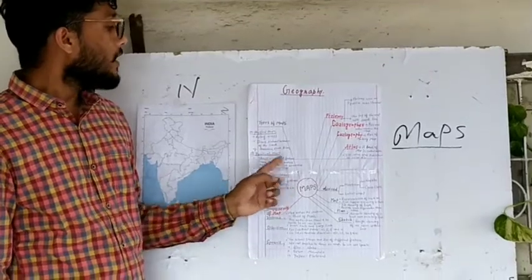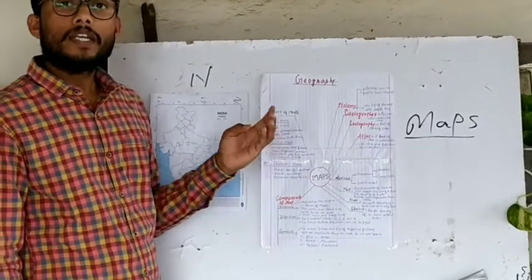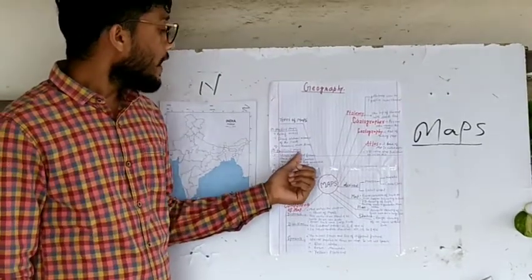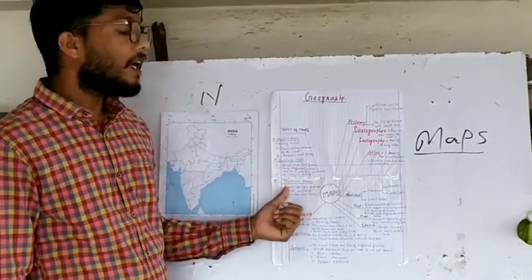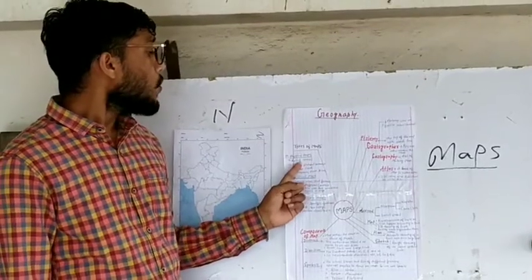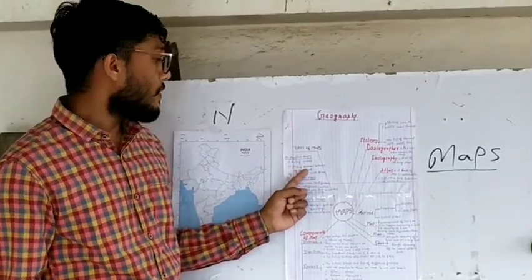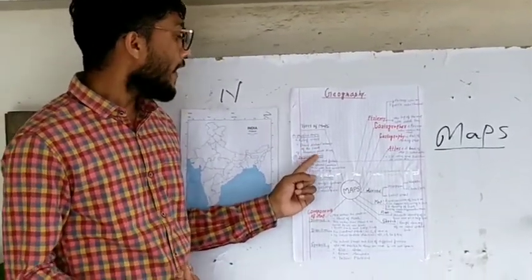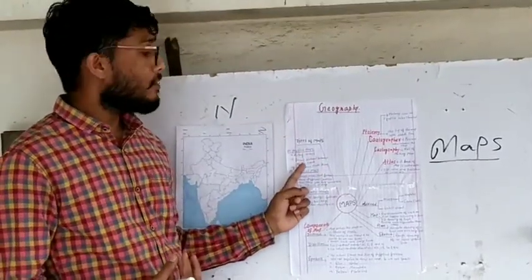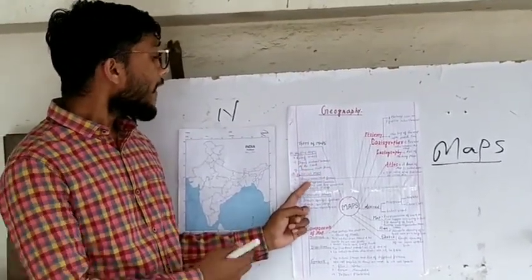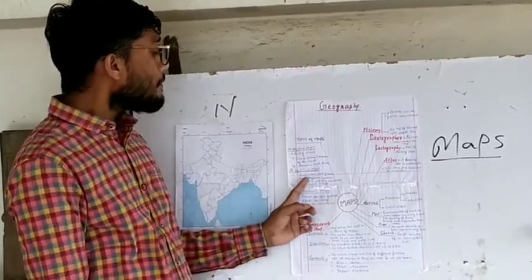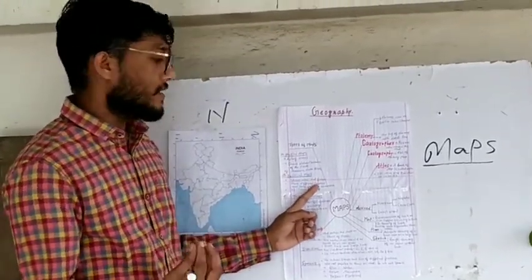There are three types of maps. The first one is a physical map, the second one is a political map, and the third one is a thematic map. A physical map shows the relief features such as mountains, plains, and rivers. A political map shows man-made features and boundaries, and we can locate towns, villages, and cities on it.